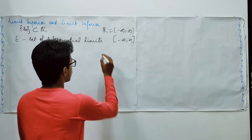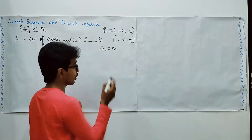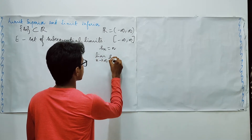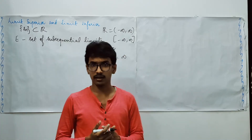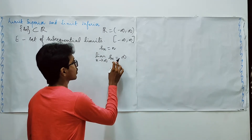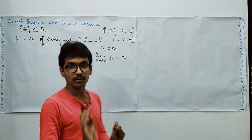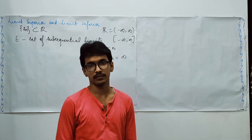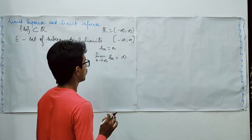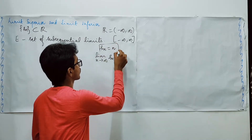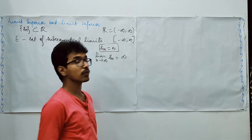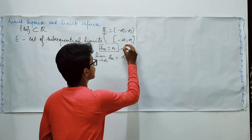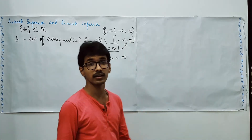For example, if you consider Sn = n as your sequence, the limit as n tends to infinity of Sn is infinity. This infinity is not included in the set of the real line, whereas it is included in the extended real line. If you look for the limit of the sequence in ℝ, it is the empty set, whereas in the extended real line, the limit is infinity.